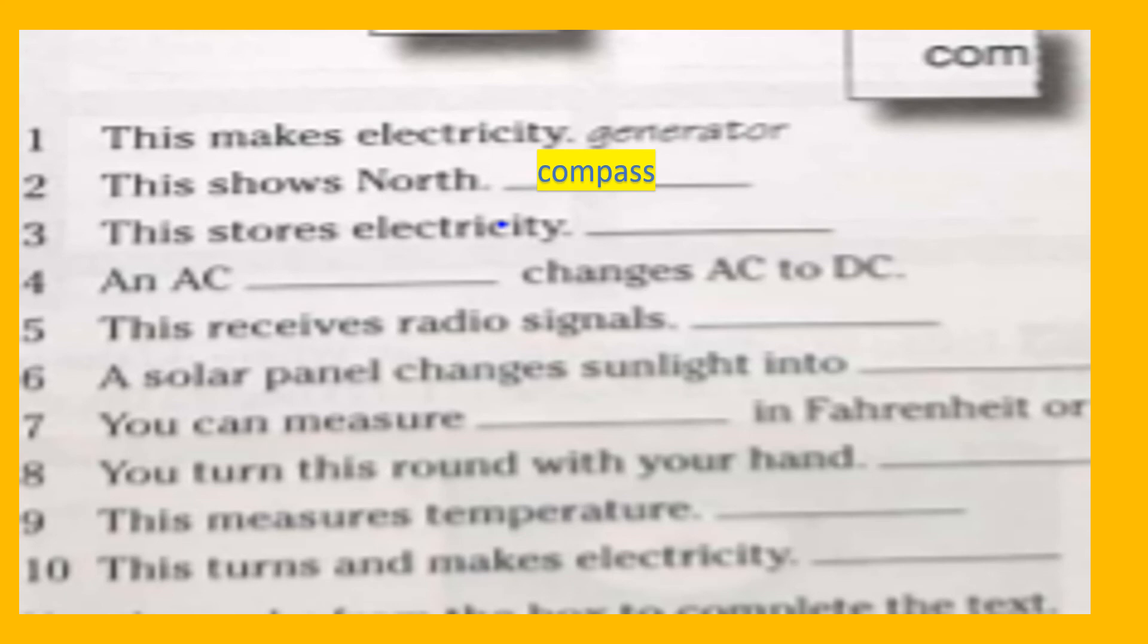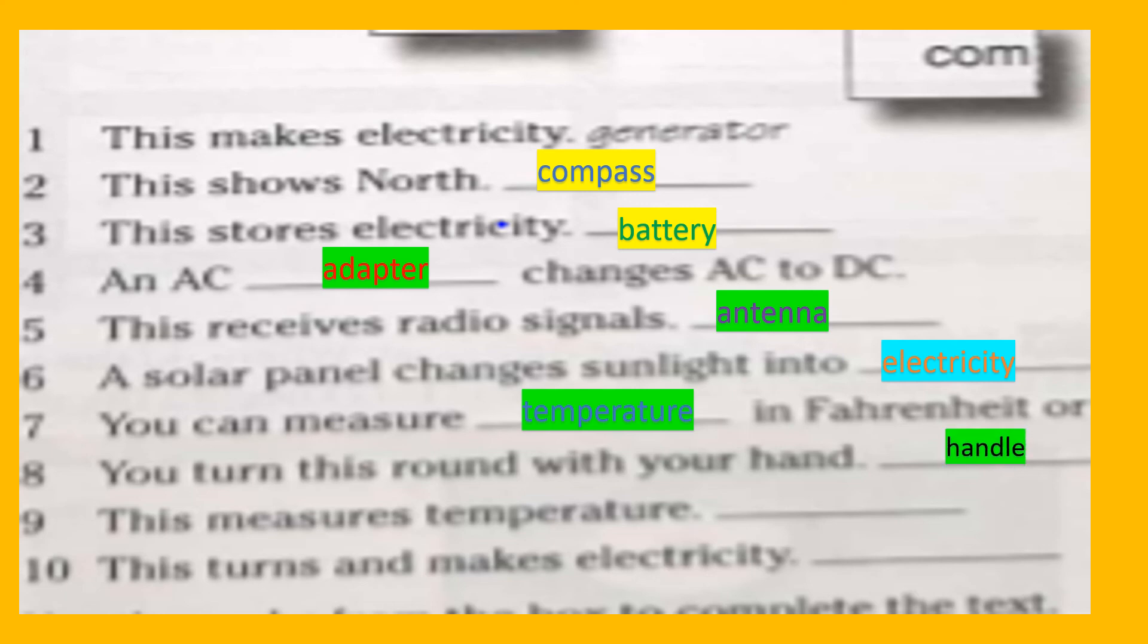Okay, welcome back. Now let's start by answering number three. What stores electricity? It's a battery. Number four: adapter. Five: antenna. Six: electricity. Seven: temperature. Eight: handle. Nine: thermometer. And finally, ten is the dynamo.